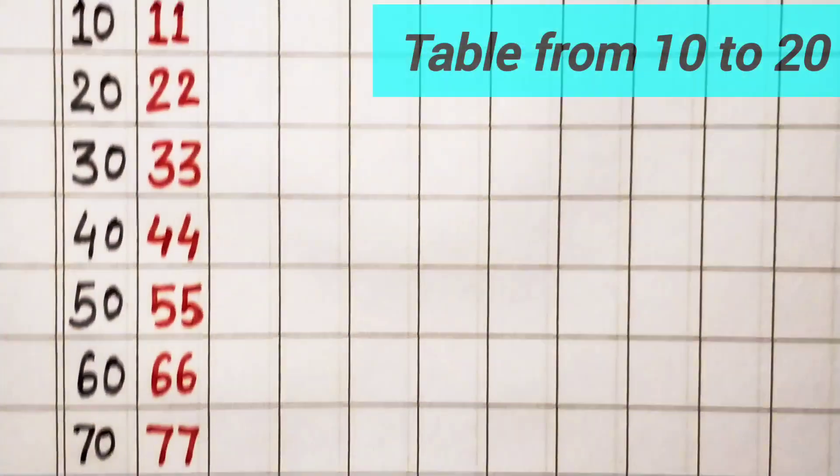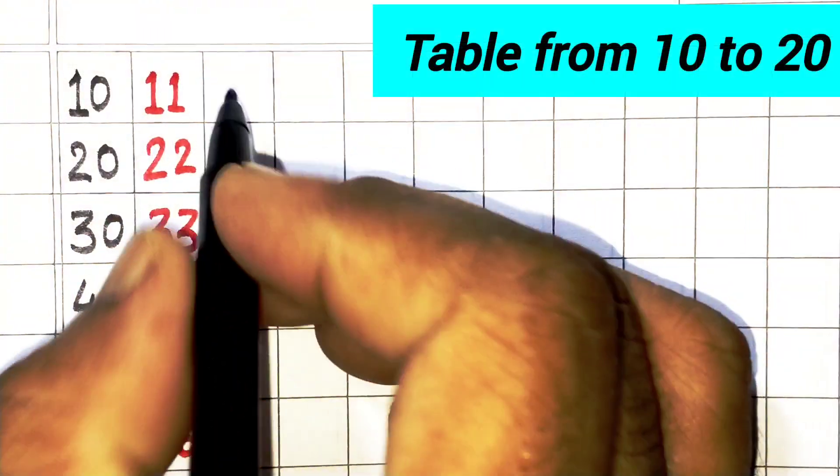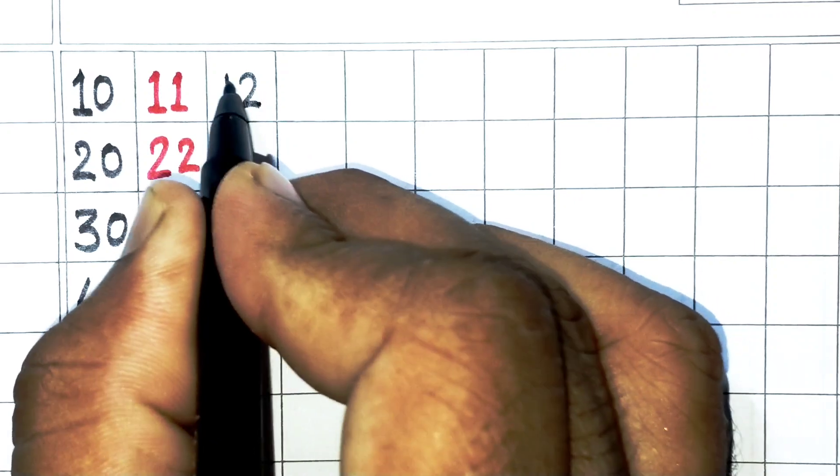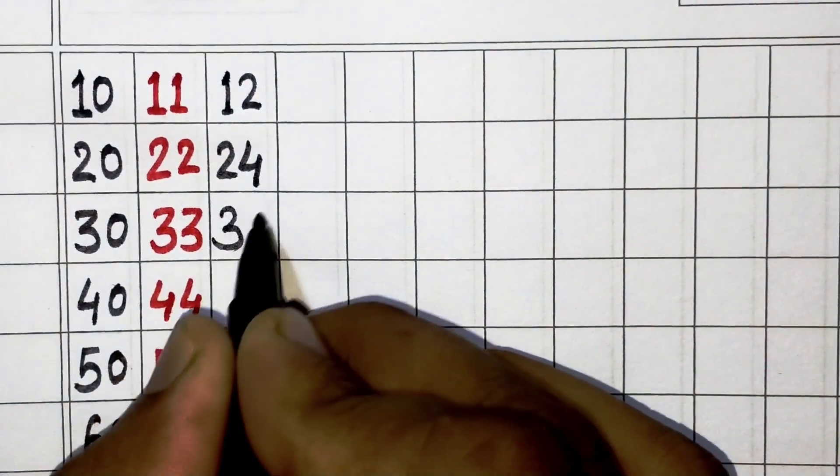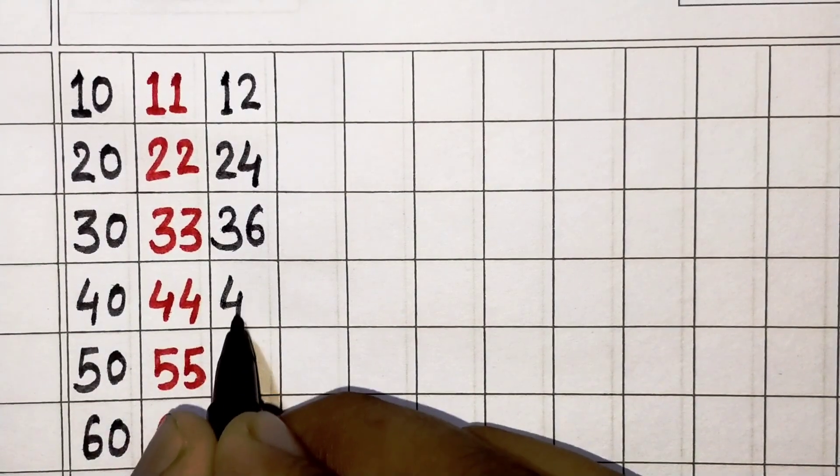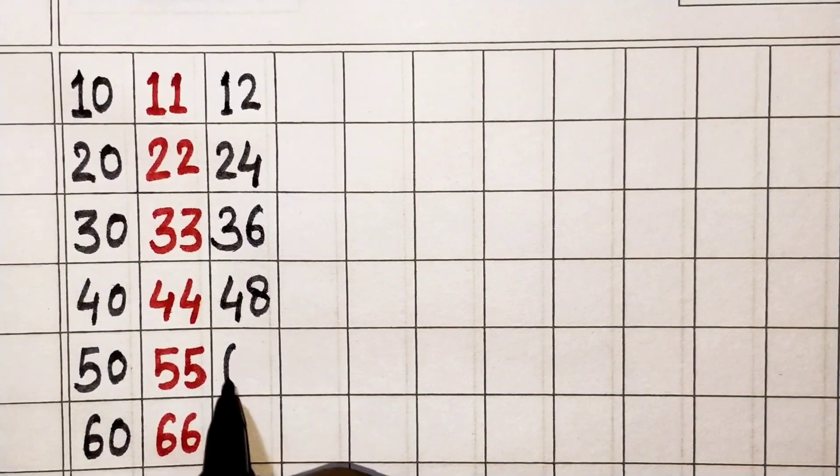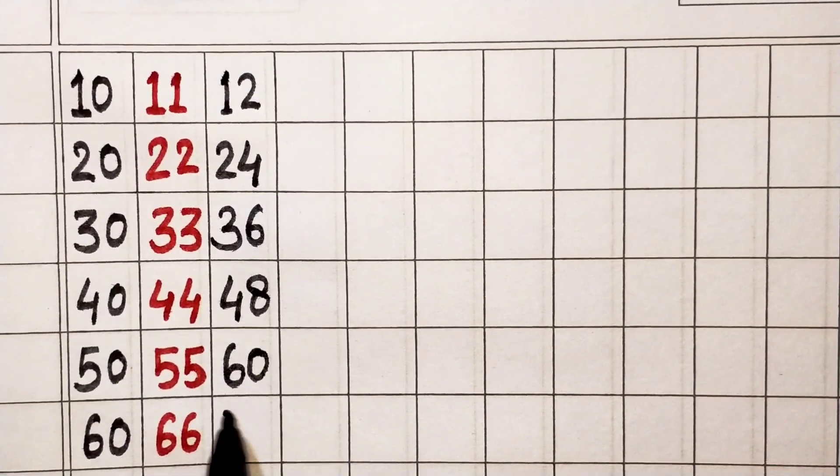Next, 12. 12 times 1 is 12, 12 times 2 is 24, 12 times 3 is 36, 12 times 4 is 48, 12 times 5 is 60, 12 times 6 is 72.